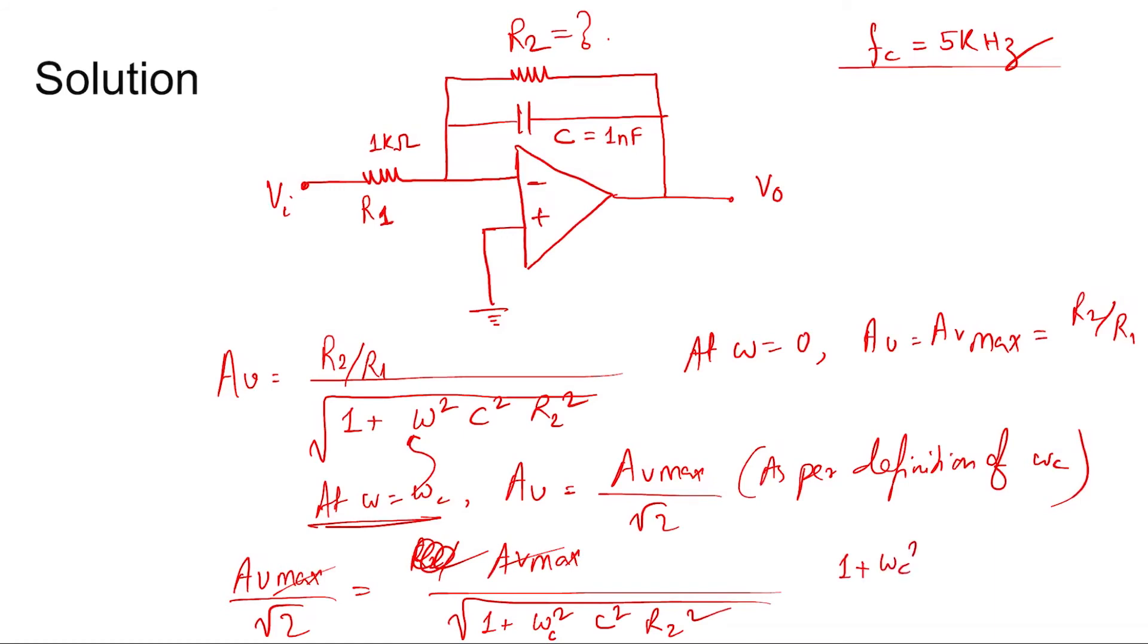Av gets canceled, and 1 + ωc²C²R2² equals 2. Squaring both sides, ωc²C²R2² equals 1. Or even we can write: ωc × C × R2 = 1.